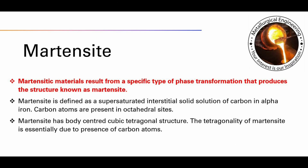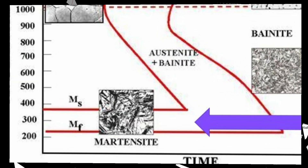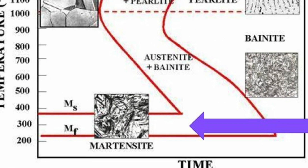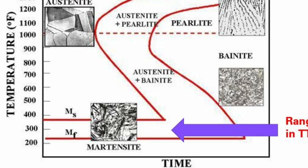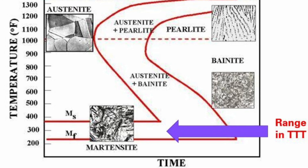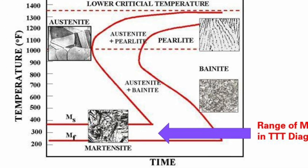Martensitic materials result from a specific type of phase transformation that produces the structure known as Martensite. Martensite transformation in steels mostly occurs during rapid cooling from above austenitic temperature, which is also referred to as quenching, during which the cooling rate is sufficient to avoid any diffusional solid state transformations.